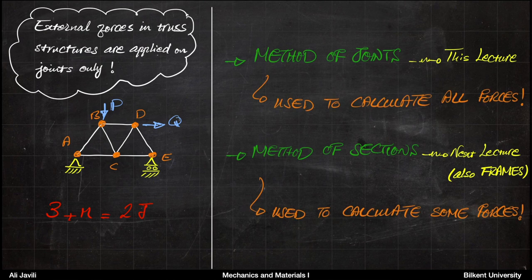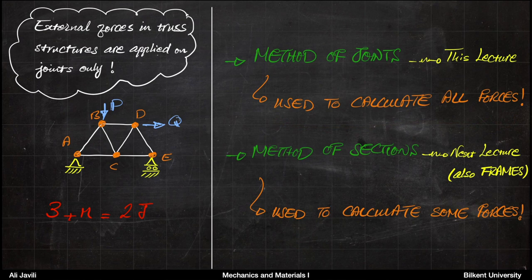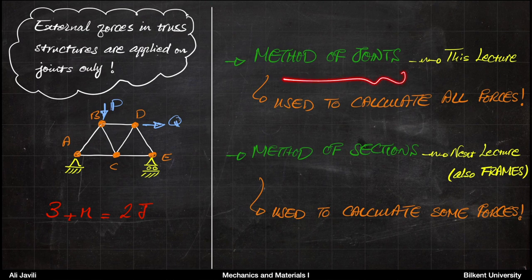How do we know which method to use? If you are asked to calculate all the forces in all members, then you should use the method of joints. However, if you are asked to calculate only very few member forces, then you can use the method of sections. Also, if you are dealing with frames, the method of joints usually won't help — you need to cut and split the structure into multiple parts.